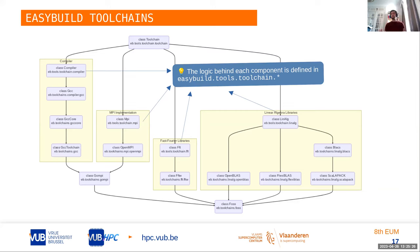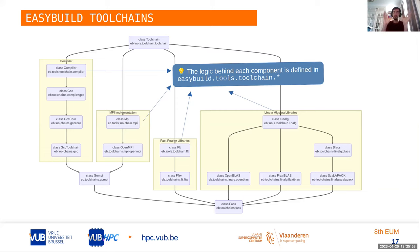Once you have all of that, you combine it into your higher-level toolchains like gompy or foss, and that's what ultimately defines the behavior of the toolchains. If you need to implement your own toolchain, it can be very easy if the components are already there — you can mix and match different MPI implementations with different linear algebra libraries and compilers. But if you want to develop your own and the components don't exist, you'll have to write the logic of those components.